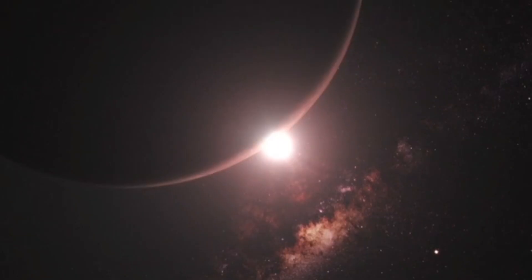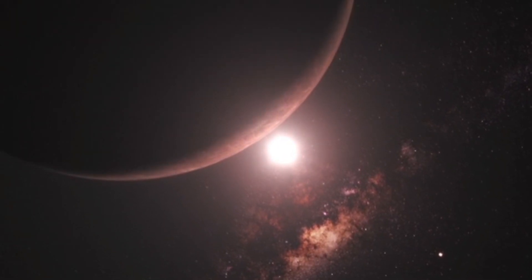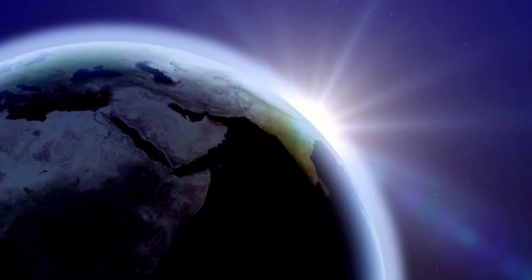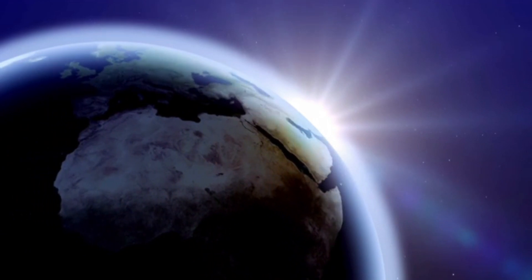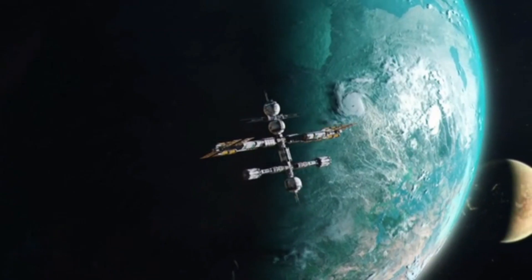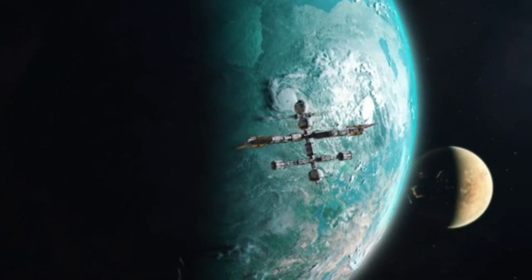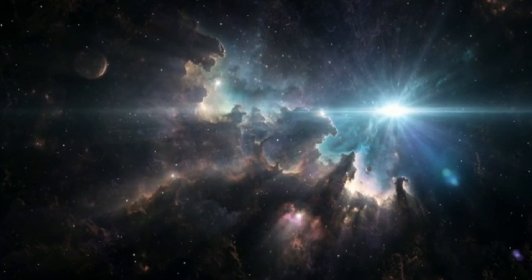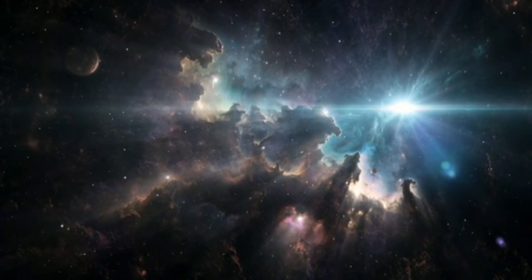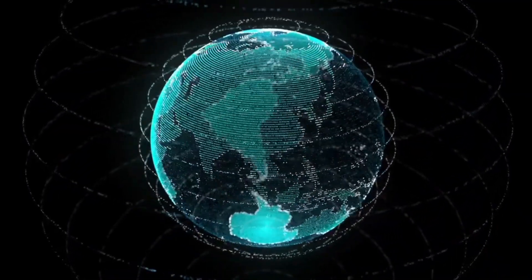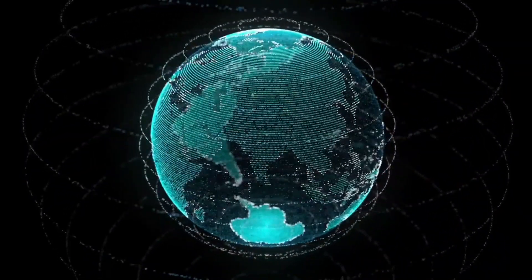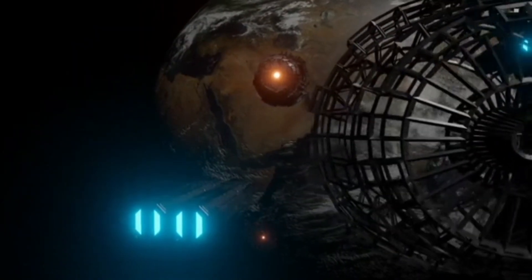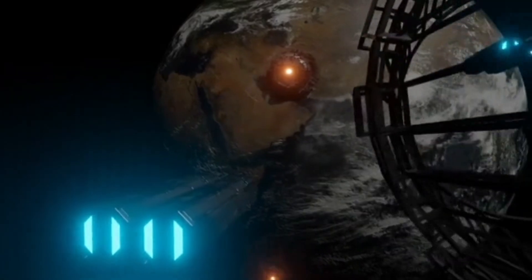Betelgeuse, a red supergiant located more than 640 light years away from Earth, dwarfs our sun in size and has captivated scientists and stargazers alike for generations. Despite its immense distance, the star's colossal nature and striking red hue make it a remarkable celestial object. If we could travel at the speed of light, it would still take over 640 years to reach Betelgeuse, a journey far beyond the capabilities of our current technology.